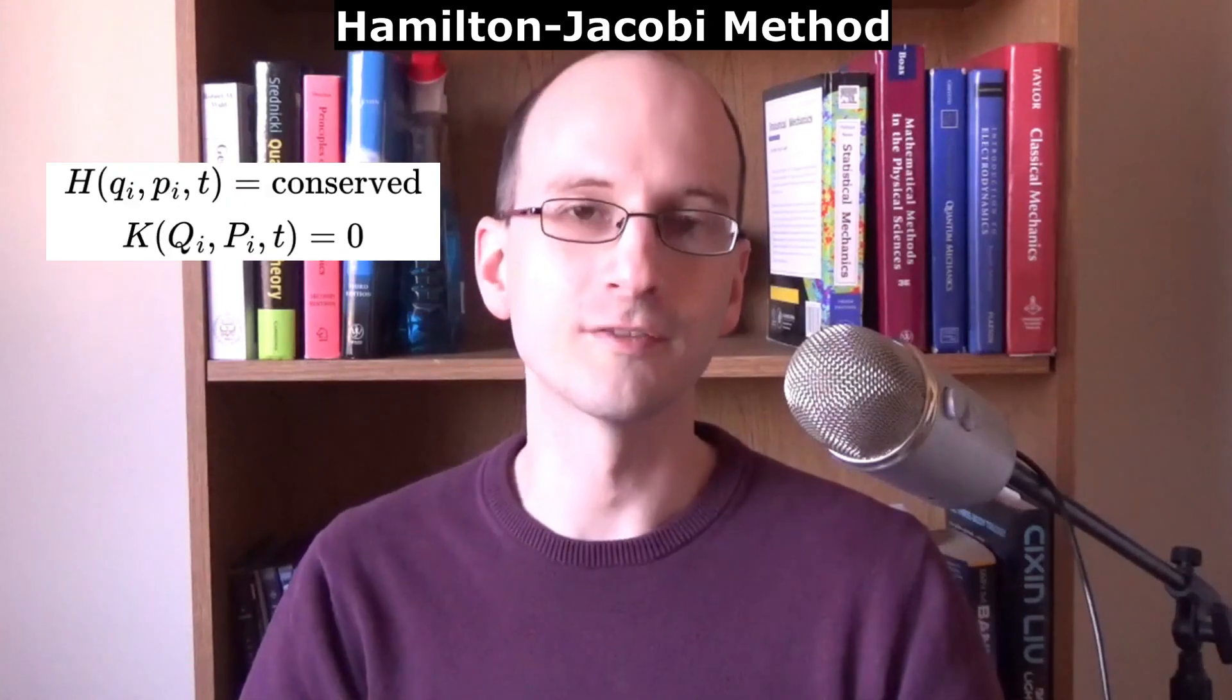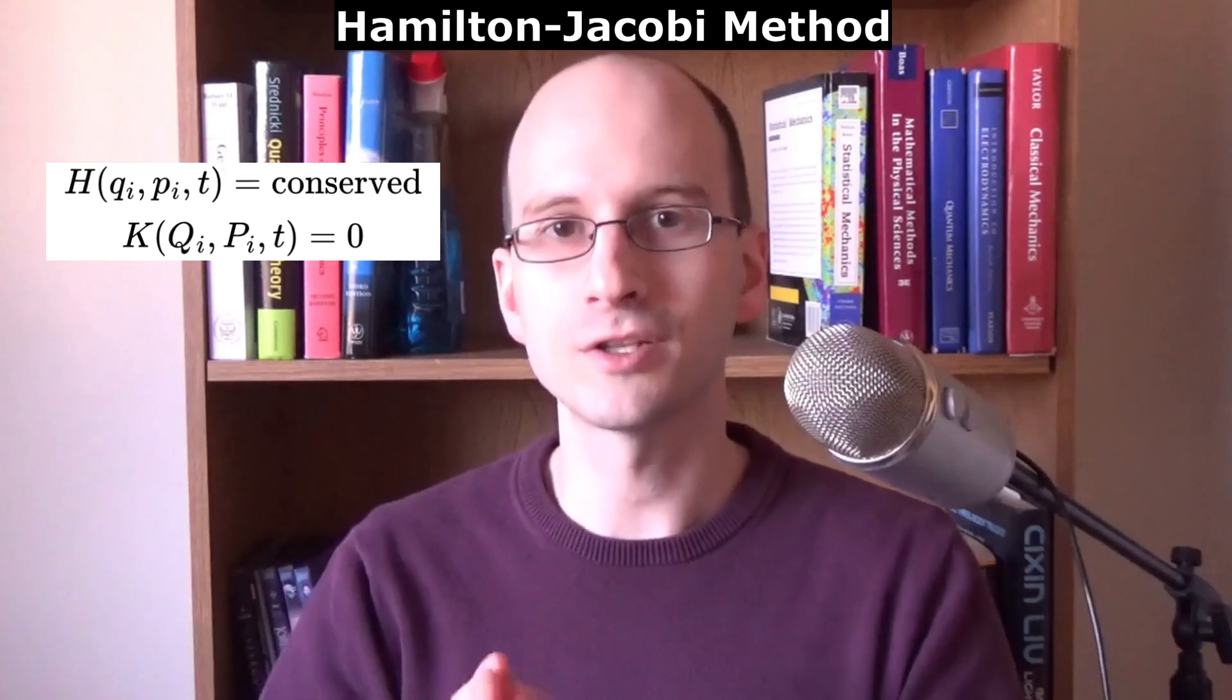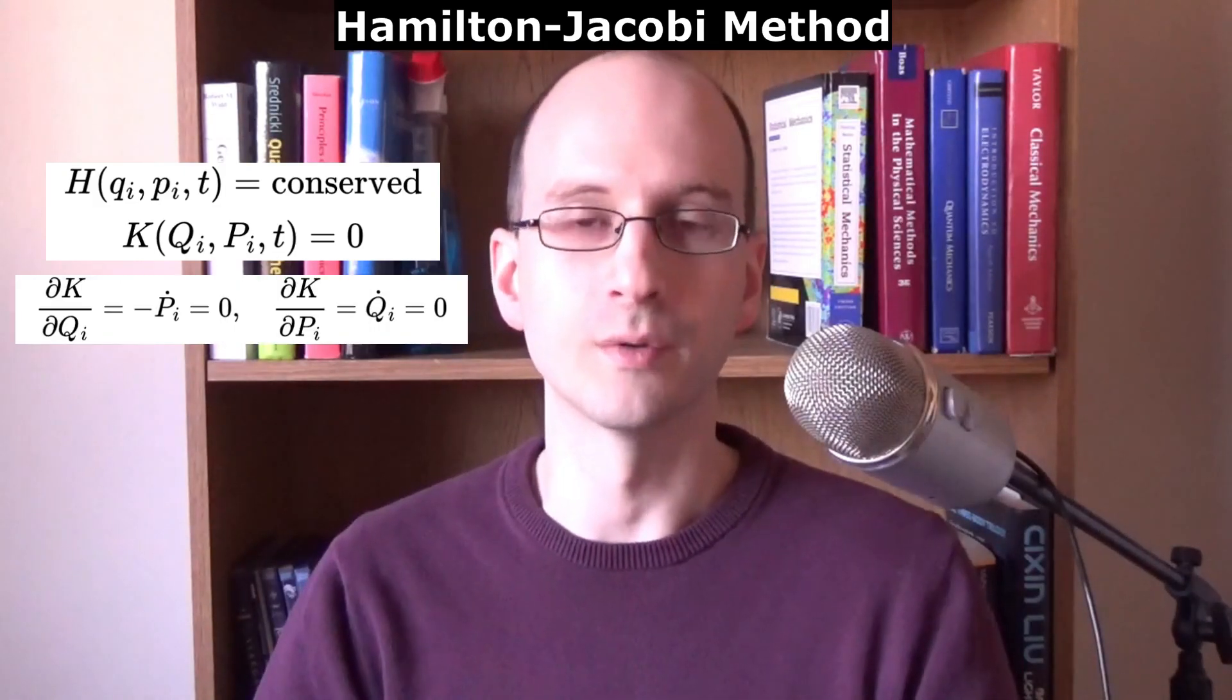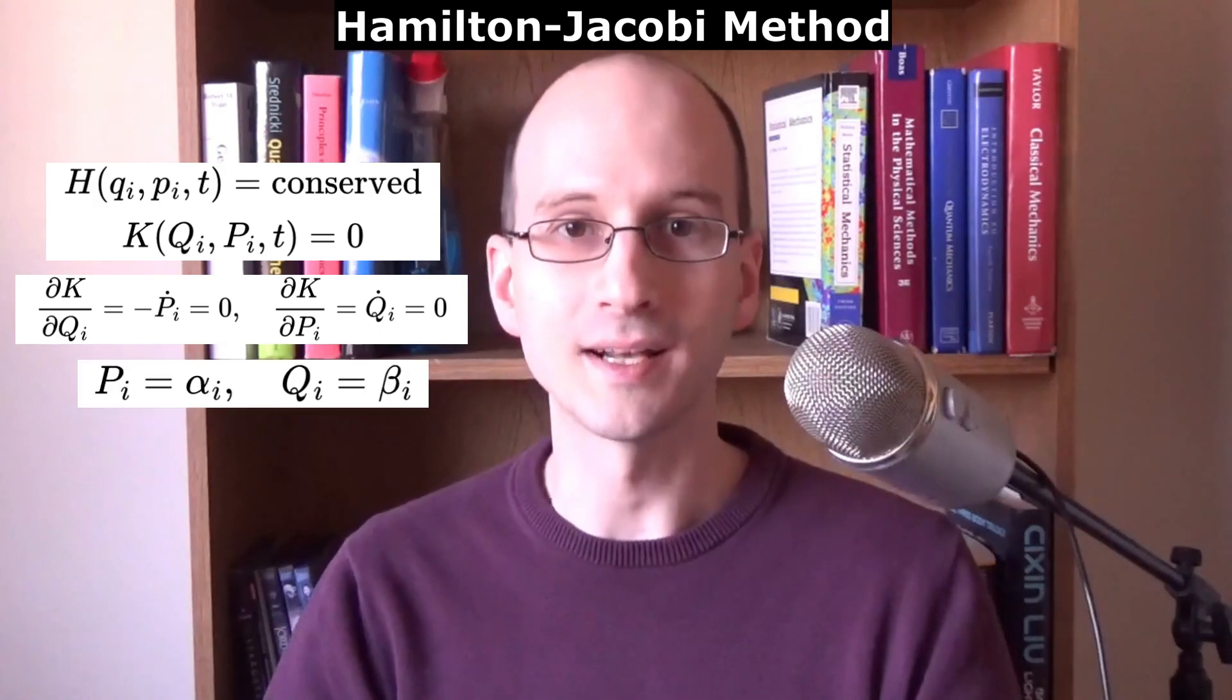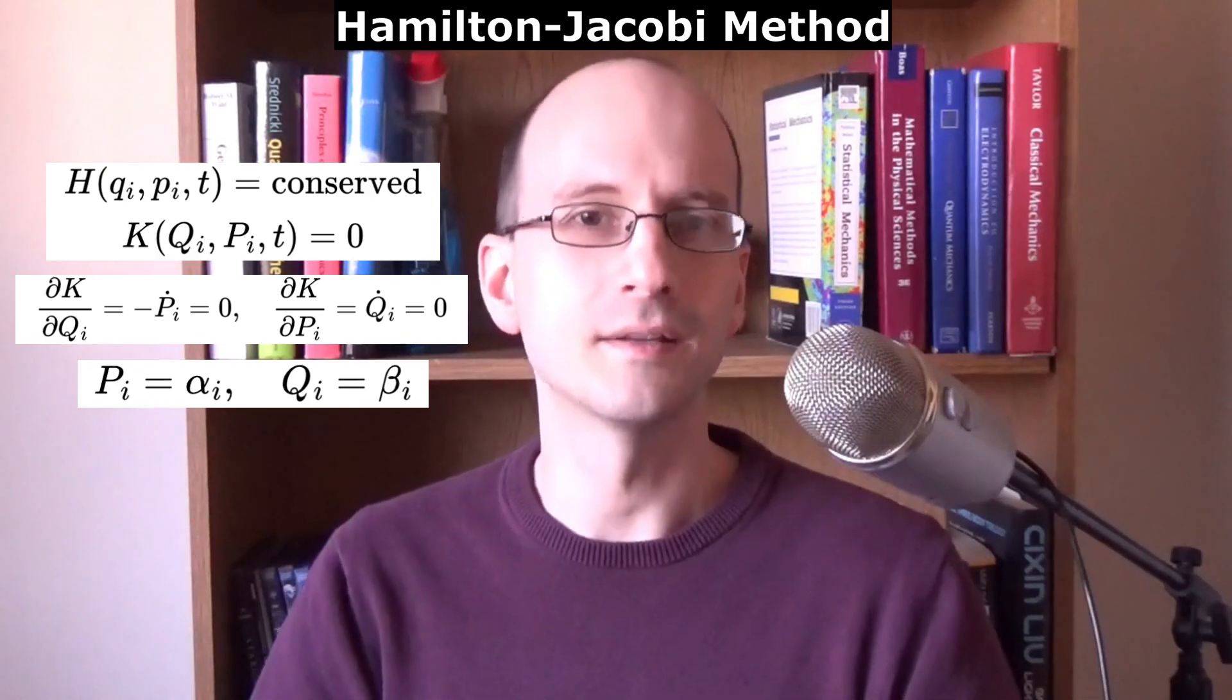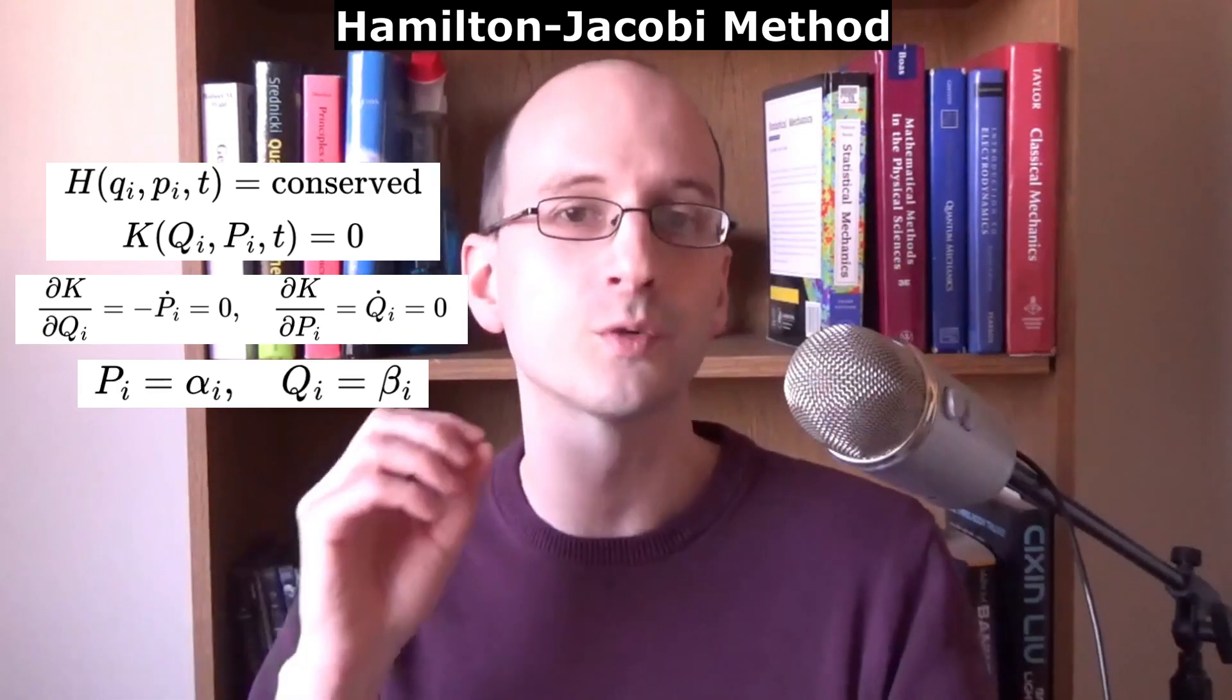All right, now it's time to move on to chapter 10. Now that we know how to change coordinates, a new method opens up to solve physics problems. The Hamilton-Jacobi method. If the Hamiltonian is conserved, that is, has a constant value, we can transform into a new set of coordinates such that that value of the Hamiltonian is zero. According to the Hamiltonian equations of motion, that means our new coordinates and momenta must be constant. Hold on a minute. If the coordinates and momenta are constant, doesn't that mean nothing happens in this system? Not so.